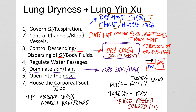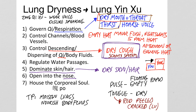If the yin is deficient, we see a relative excess of yang manifesting as empty heat: malar flush, night sweats, five-palm heat, and afternoon or evening heat. If the yin is deficient, the Zong qi can become deficient, so again we can have a weak voice and dislike of speaking. Key symptoms are dry mouth and throat, a dry cough with scanty sputum, and afternoon or evening heat.